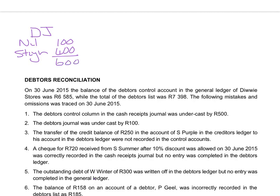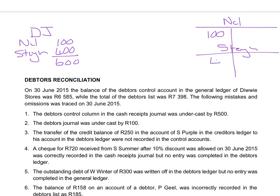Then we will transfer the individual entries to the accounts of the debtors. We will open an account for Now, debiting their account with 100 rand in the debtors ledger, open an account for Stain, and debit their account with 400 rand in the debtors ledger. At the end of the month, we will transfer the total in the debtors journal to the debtors control on the debit side.